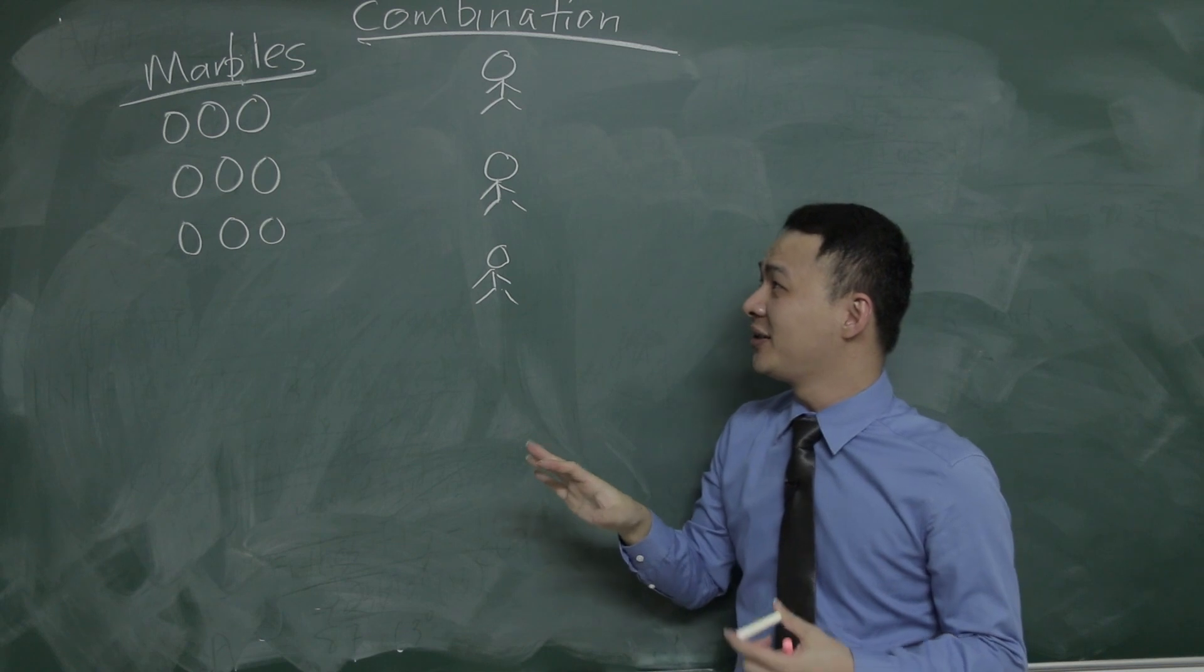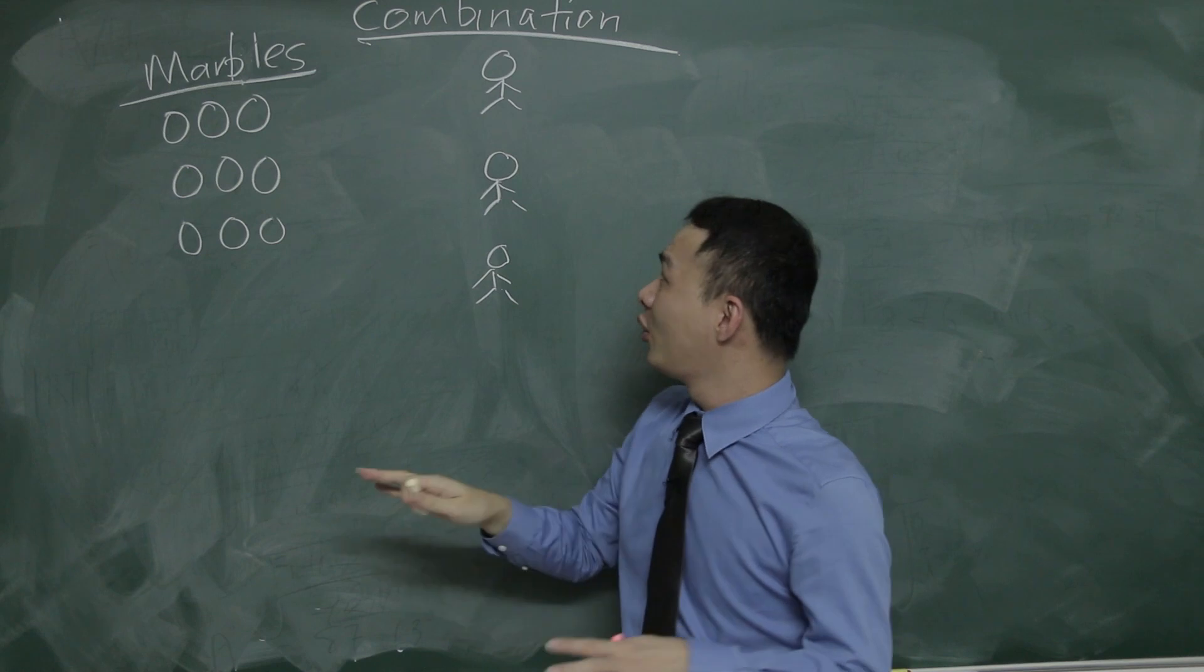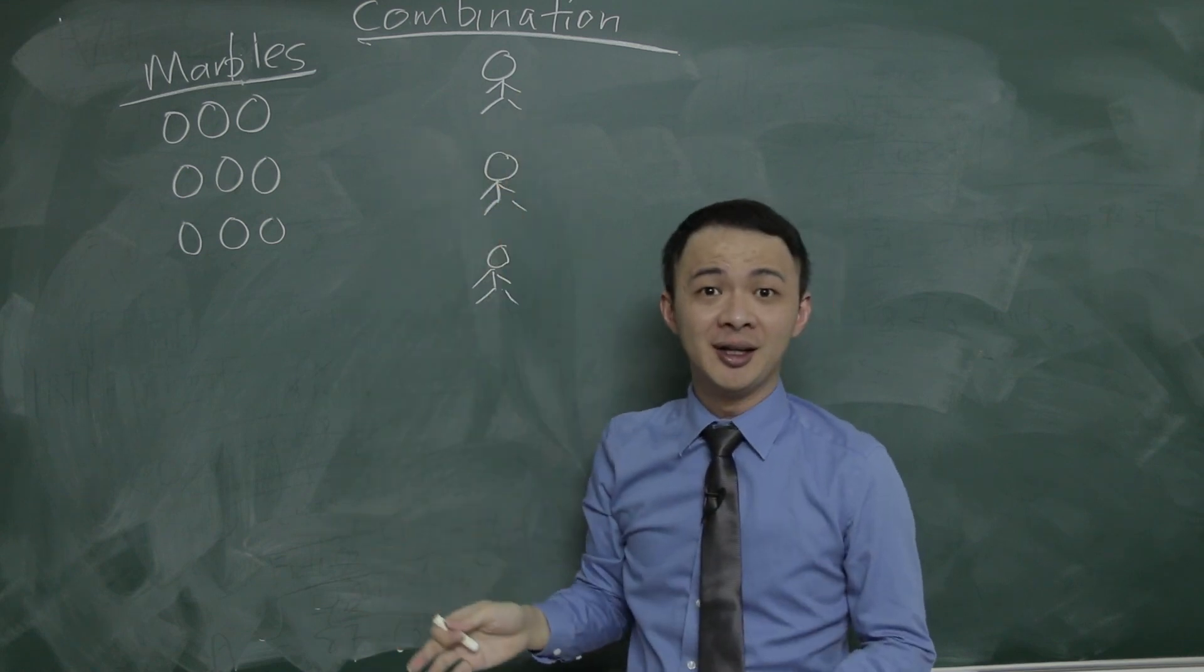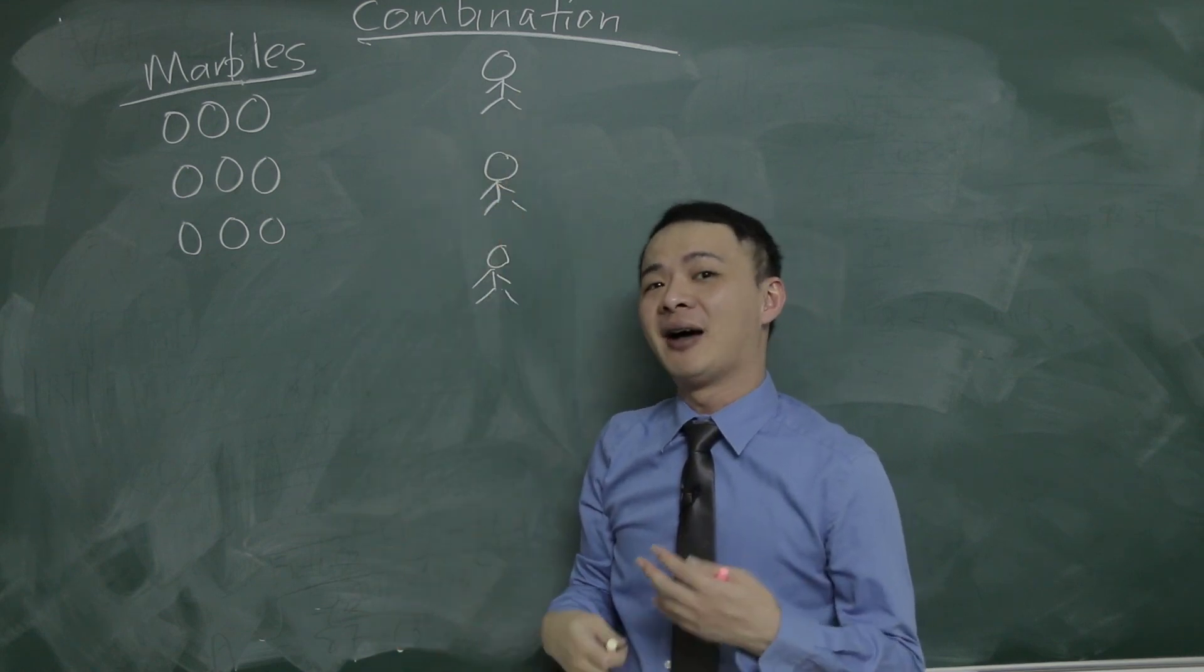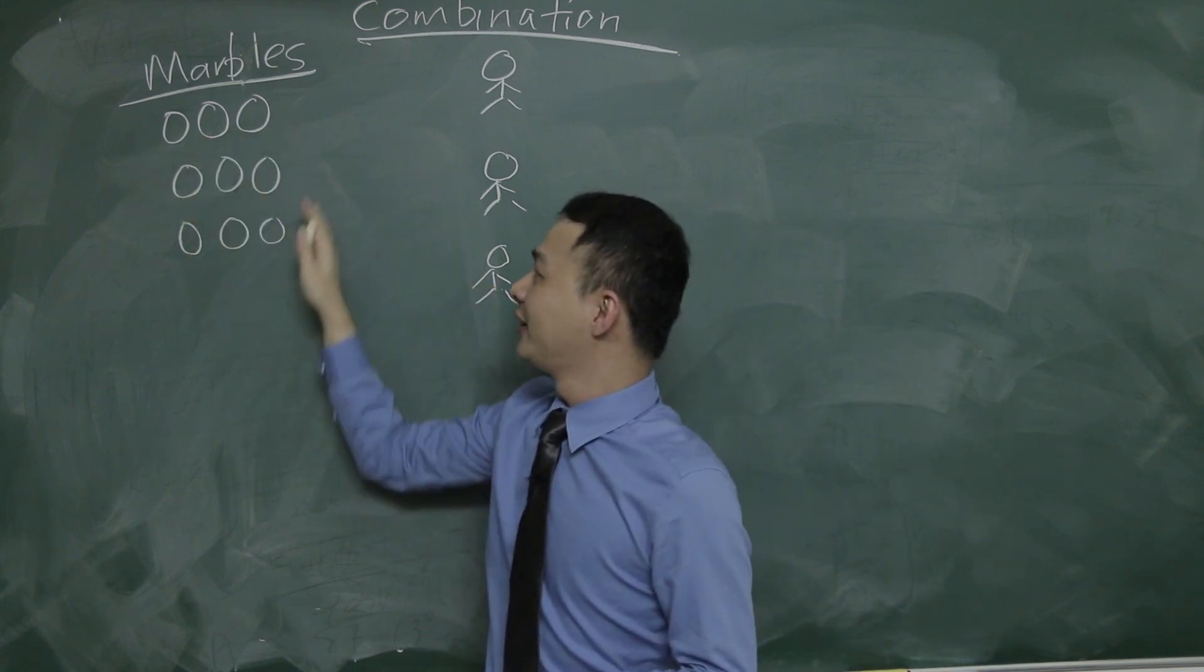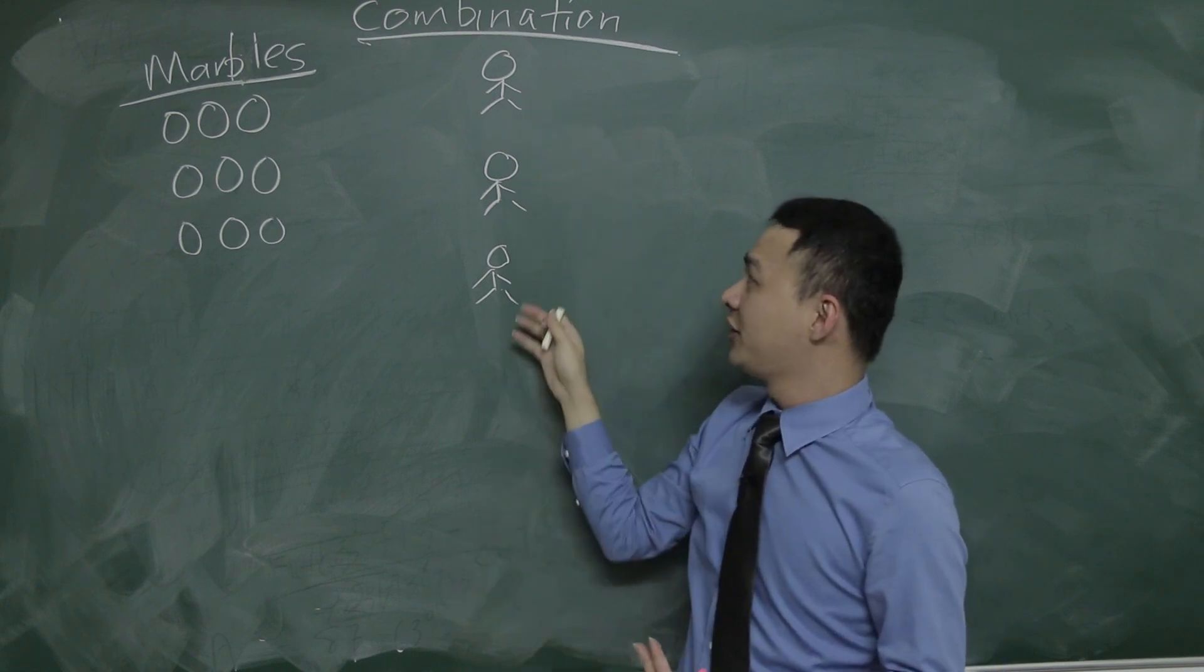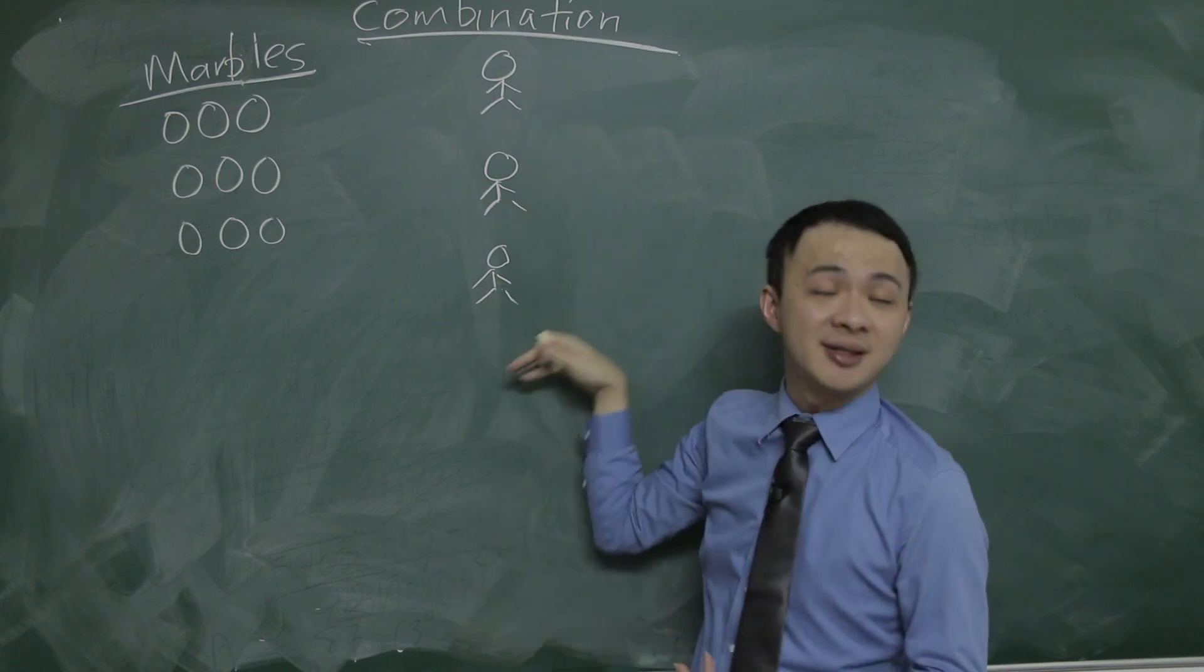Okay, the question is given something like this. You have nine marbles and you need to divide equally to three different children, and then you need to find the number of ways you can do this. So imagine if you have nine marbles, you want to divide equally to three different children, three different kids here, let's say kids A, B, and C.